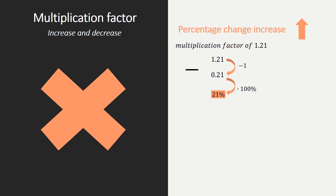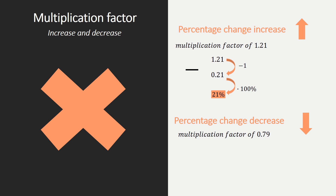Let's have a look at the decrease when our multiplication factor is given and it's 0.79. Again, you always must subtract 1 first, so what you get is minus 0.21. Afterwards, you need to multiply by 100% since you want to calculate the percentage change, and you get minus 21%. The minus tells us that we're dealing with a decrease in price, so that is going to become less.